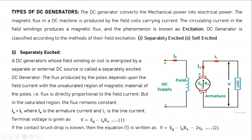The generated EMF is EG (not EB — that is for motors). There is an internal armature resistance RA. The armature current IA flows from the generator to the load. Here IA and IL are equal, where IA is armature current and IL is line current. The terminal voltage V, available at the terminals, is equal to the generated EMF EG minus the drop across the internal armature resistance.